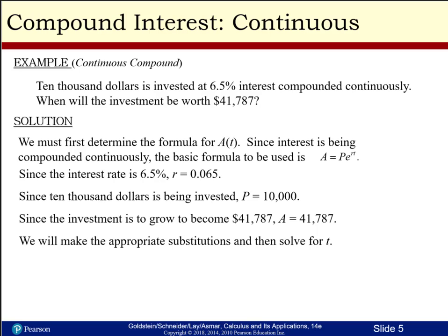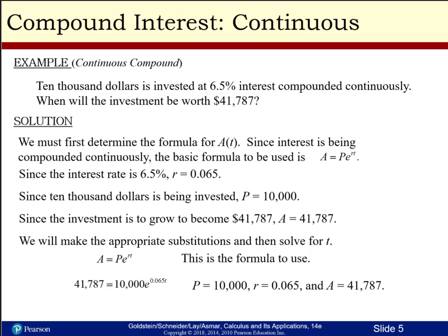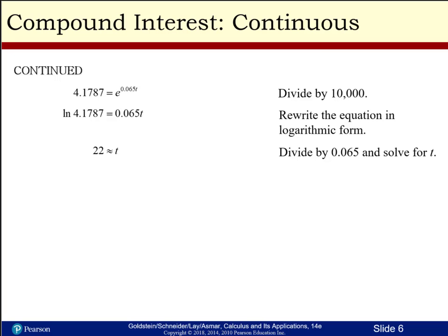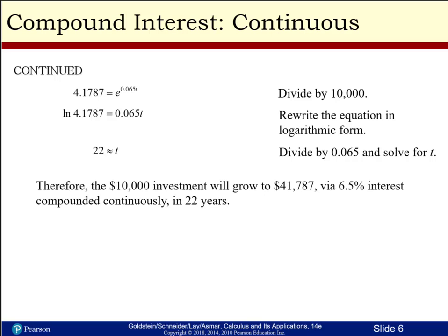The investment A is supposed to grow to $41,787 — that would be our A, or amount. We substitute into our PERT formula and solve: divide both sides by $10,000, then take the natural log of both sides, then divide both sides by 0.065, and we get t equals 22. Therefore, the $10,000 investment will grow to $41,787 at 6.5% interest compounded continuously in 22 years.